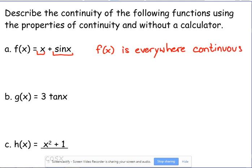Example B: g(x) is three times the tangent of x. This is our scalar multiple rule. So tangent, everywhere that tangent is continuous, then three times tangent is going to be continuous.